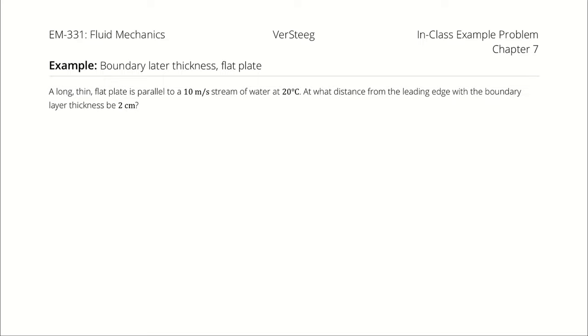A long, thin, flat plate is parallel to a 10 meter per second stream of water at 20 degrees Celsius. At what distance from the leading edge will the boundary layer thickness be 2 centimeters?